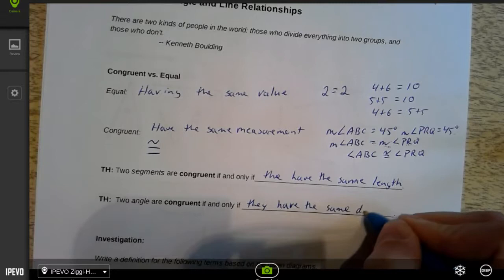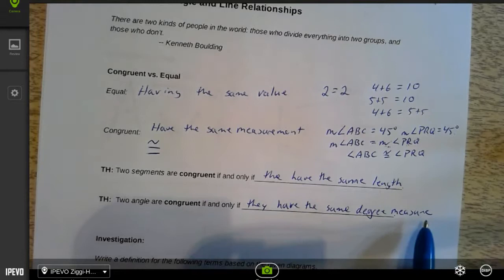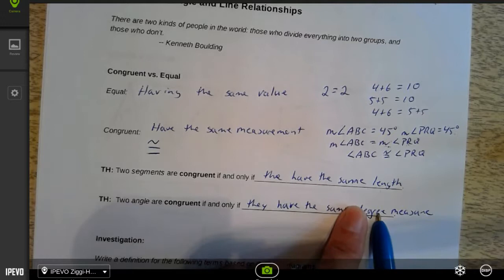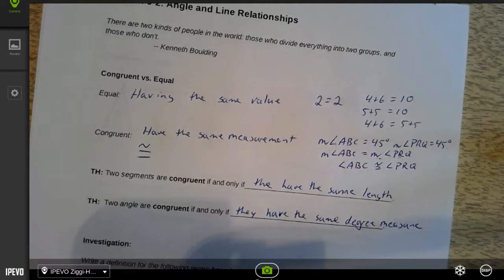That's important because remember we don't measure angles by how long the ray is. We measure an angle by how big it opens - that's in degree measurements. So that's important. We have to figure out what things are. So what we're going to be doing today is an investigation.